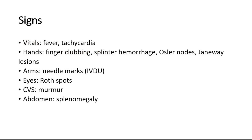Some of the signs of infective endocarditis: first, look at the vital signs. Most patients present with prolonged fever, so we take the temperature to double check. They also have tachycardia, which is an increased pulse rate. We check the hands for finger clubbing, splinter hemorrhage, Osler nodes, and Janeway lesions, which will be shown in pictures later. On the arms, look for needle marks to suggest IV drug use, where Staphylococcus aureus could have entered through the skin due to needle-sharing activities.